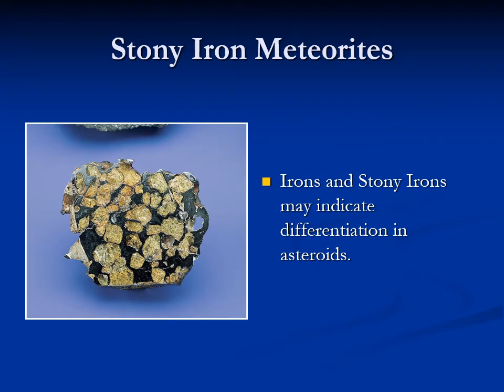Stony-iron meteorites are a mixture of rock and iron — you'll have iron pieces together with rock, and often the rock itself is highly crystallized. For example, you can have olivine crystals, like this rock right here. We have examples on campus with iron mixed with olivine — some look more like a big chunk of iron with olivine, others are more like olivine with chunks of iron, and some are a hodgepodge like in this picture.